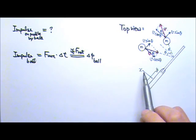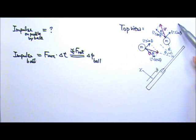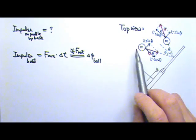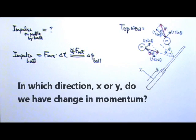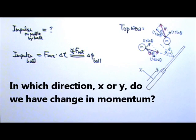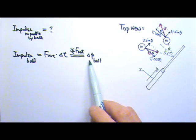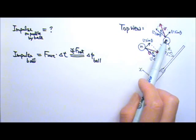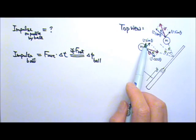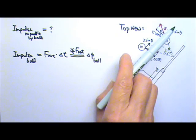Now if you look carefully in the x direction and the y direction, in which direction do we have the change in momentum? We have changing momentum only in the x direction, not the y direction. Because in the y direction, the initial and the final velocities are both v sine theta, same direction.